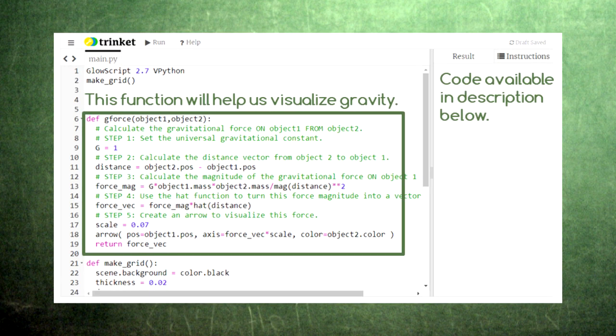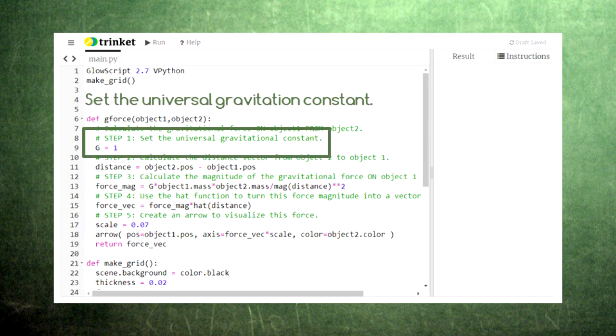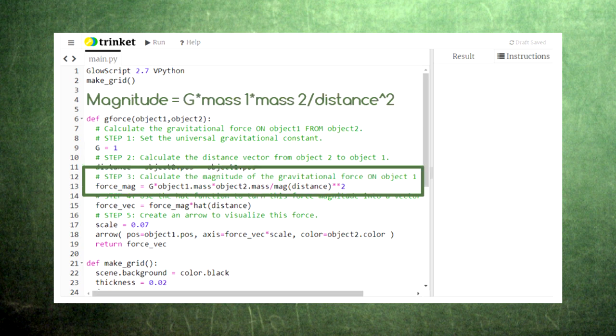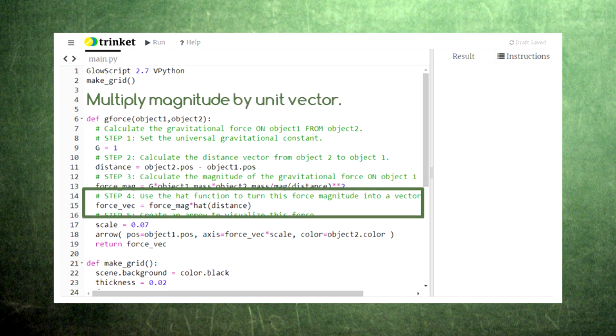Here's a function we can use to visualize the force of gravity. Remember, object 1 is experiencing the force and object 2 is exerting the force. First, we set the value for the universal gravitation constant. Next, we calculate the distance vector from object 1 to object 2. Next, we calculate the magnitude of the force from object 2 on object 1. Finally, we turn this magnitude into a vector by multiplying the magnitude by the distance unit vector.